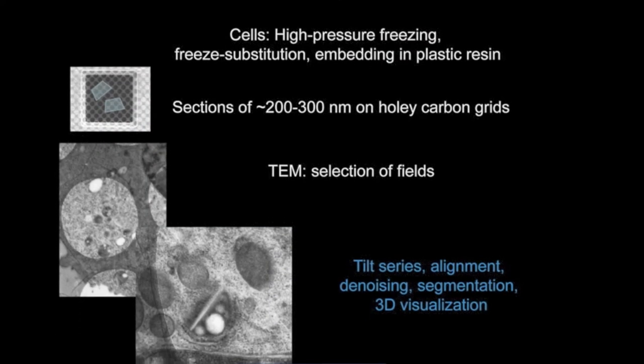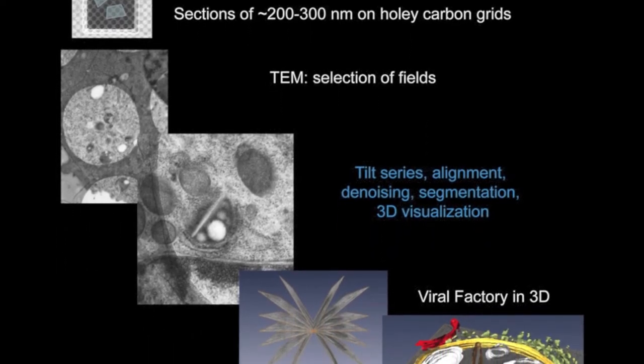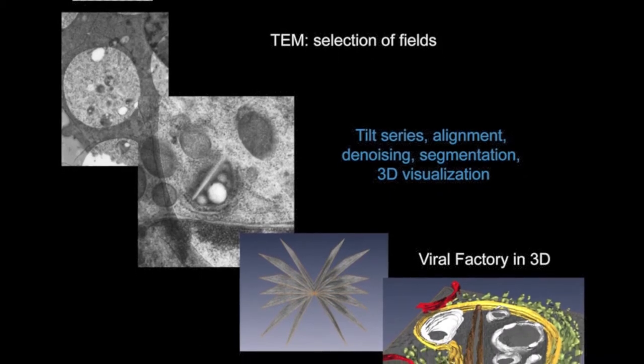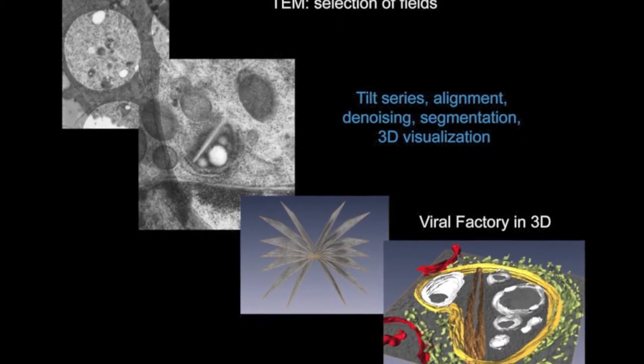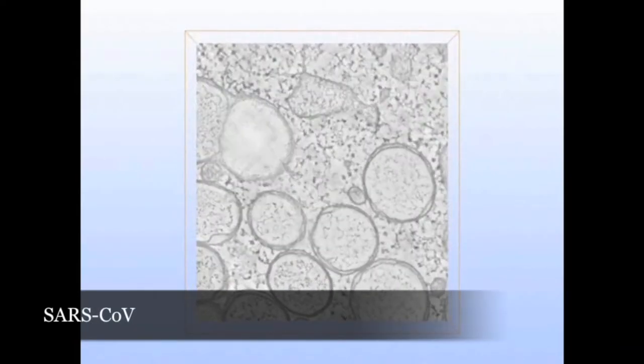In electron tomography, samples are loaded onto a transmission electron microscope, tilted in incremental degrees, and 2D images are collected at each angle. The series of images is then combined to generate a 3D reconstruction.